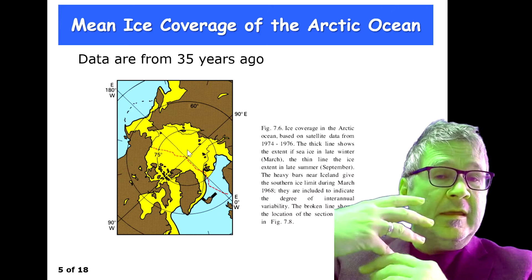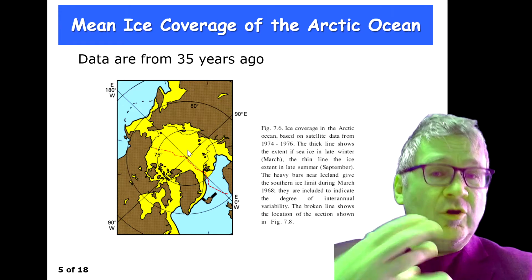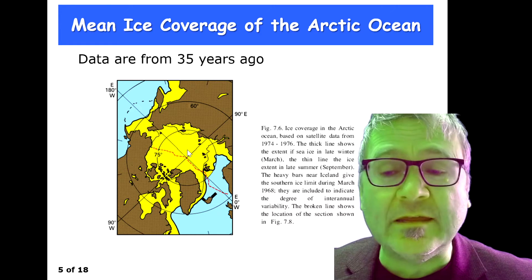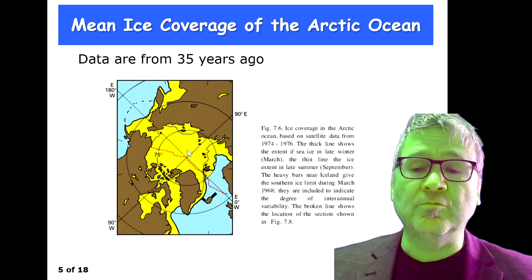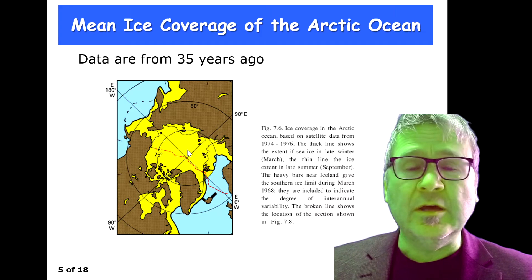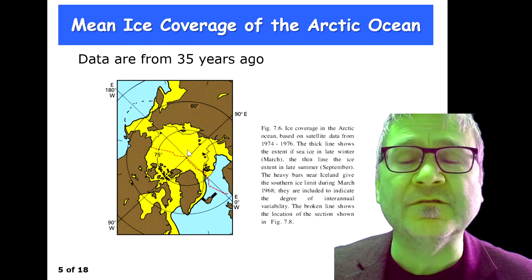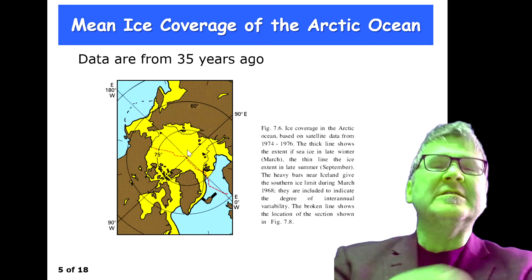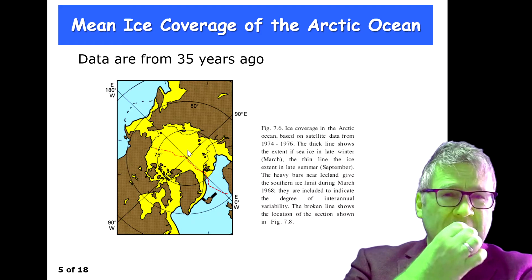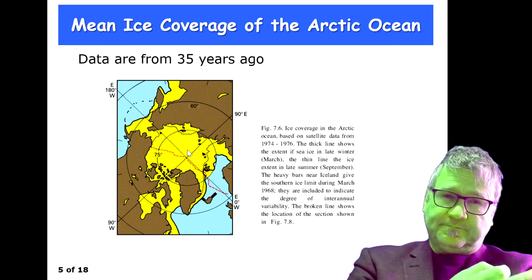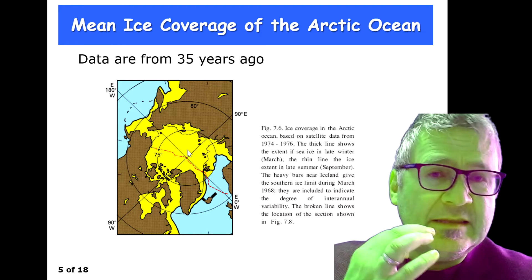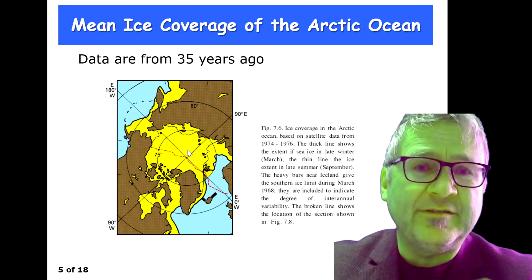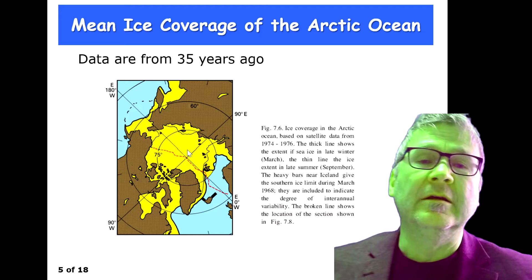This is a continent-free ocean region which supports the existence of sea ice. Why is that so important? The key roles of sea ice in the climate system are as follows.